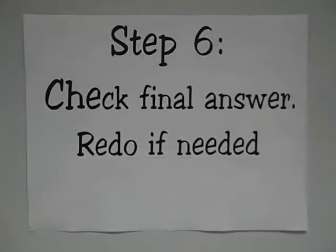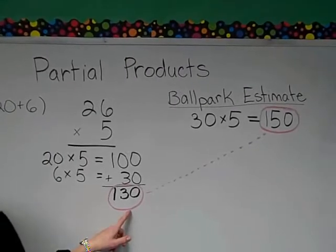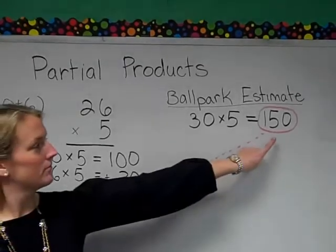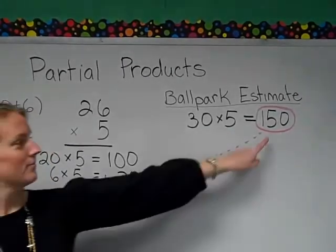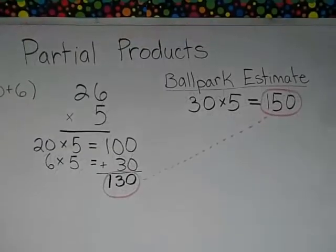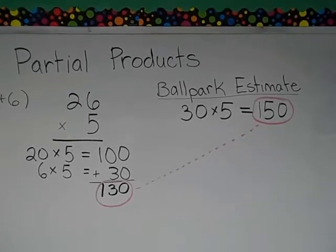Step six: check the final answer. Redo the problem if needed. In our final answer of 130, we want to compare it against the ballpark estimate of 150. Our final answer of 130 seems within reason of our ballpark estimate. It appears as though we are done.